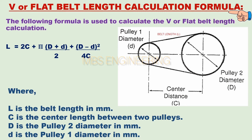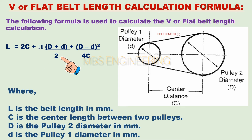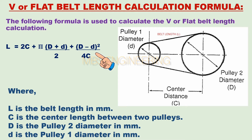We will learn how to calculate the length of a belt drive V or flat belt using the following formula. The belt length L equals 2C plus pi multiplied by (capital D plus small d), divided by 2, plus the whole square of (capital D minus small d), divided by 4C.